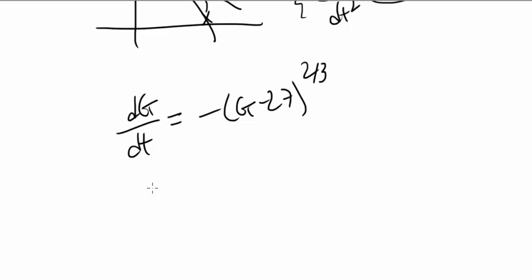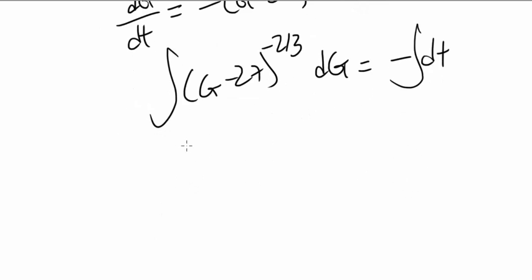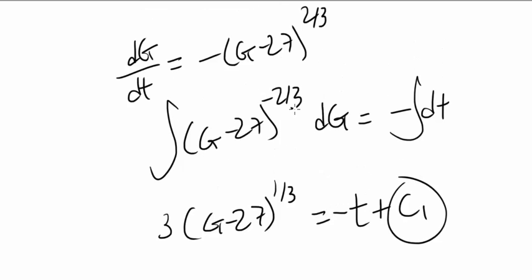Let's start by separating the variable. You got (g minus 27) to the negative 2/3 dg equals negative dt and you're going to integrate both sides and that's going to get us 3 times (g minus 27) to the 1/3 equals negative t plus some constant. How do you figure out this constant of integration?